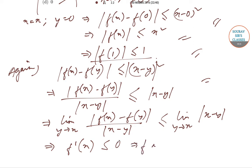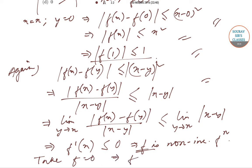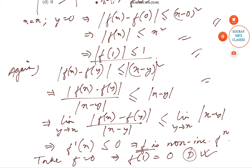This implies that f is a non-increasing — in fact constant — function. So if we take f equal to 0, then f(1) = 0, which is option D. Today we have solved question numbers 20 and 21 from the ISI QMS paper of year 2016. We will solve the next questions in subsequent videos. Till then, keep watching Sources Classes videos for more solutions and content. Thank you very much.